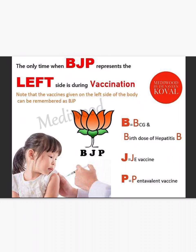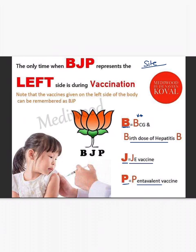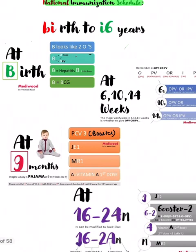For the site of vaccine administration, all vaccines are administered on the right side except a few. Use the mnemonic BJP: B for BCG and birth dose of Hepatitis B, J for Japanese Encephalitis, and P for Pentavalent vaccine — these three are given on the left side, while all others are given on the right.